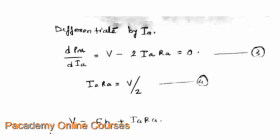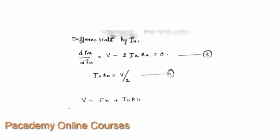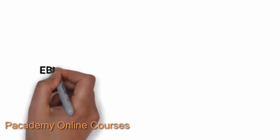This is the equation for the maximum power derivation. To find the maximum, we differentiate P_M with respect to I_A. Differentiating and equating to zero, we get V minus 2·I_A·R_A equal to zero, which gives I_A equal to V divided by 2R_A. Substituting this back into the motor voltage equation, we will see the result in the next slide.